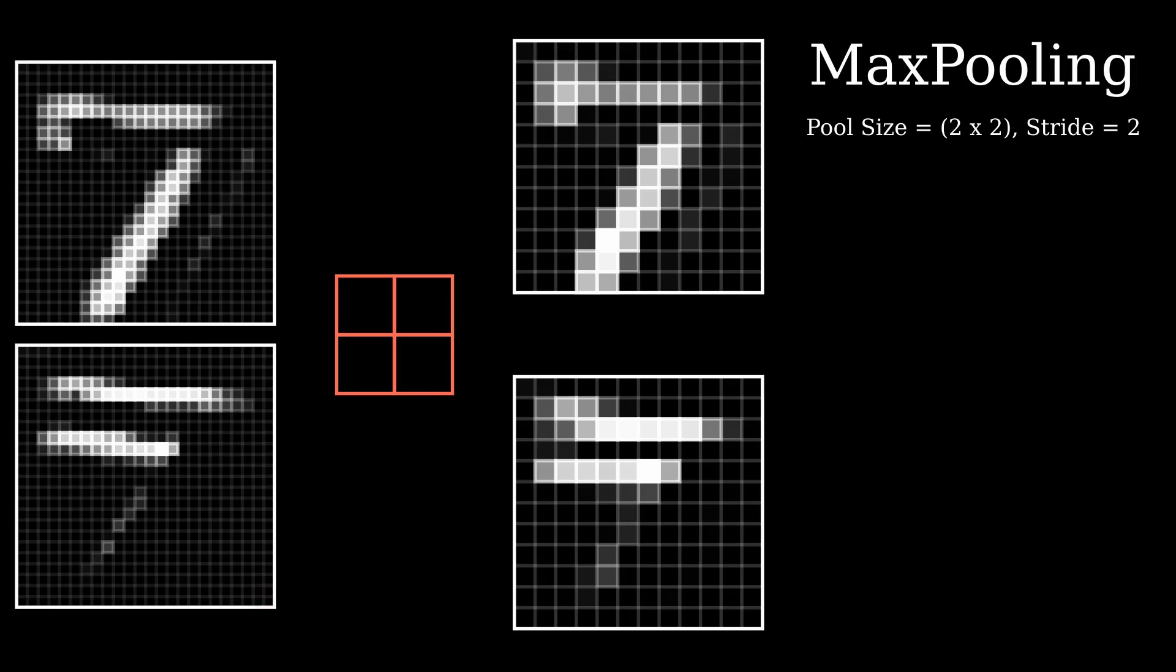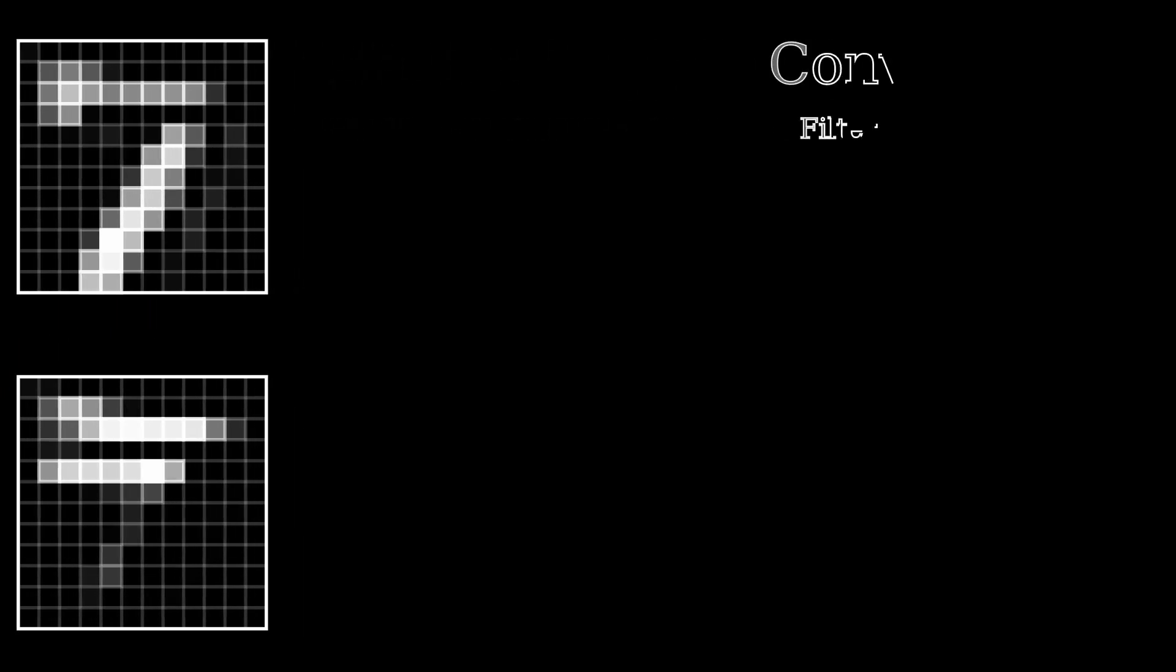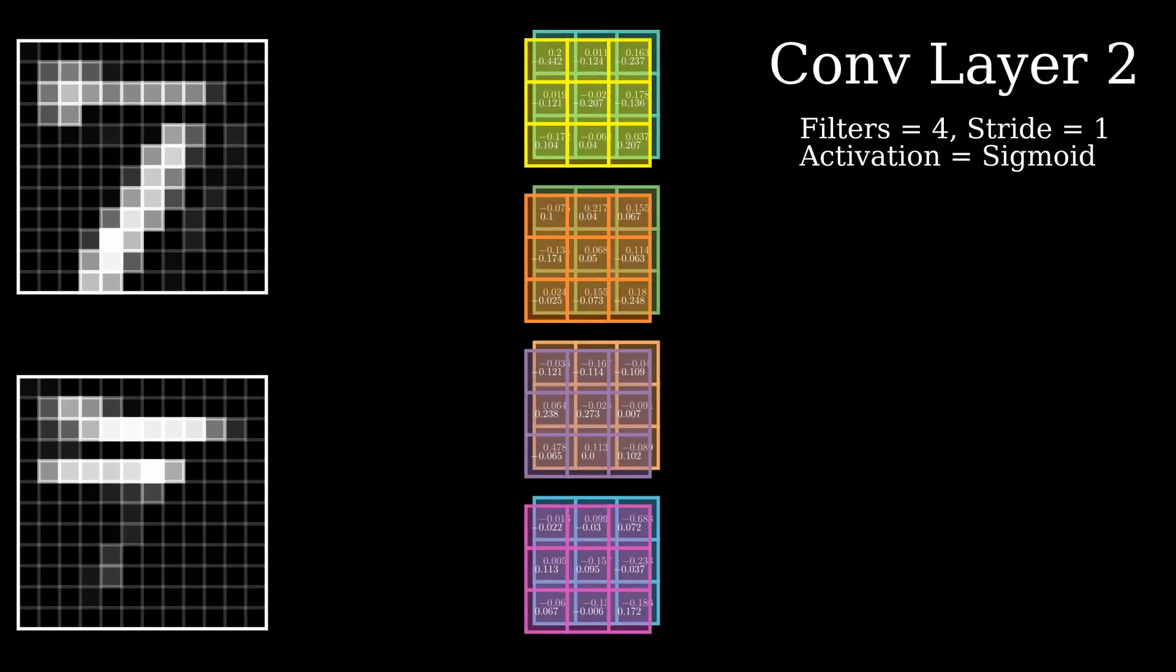Have a go and count the pixels if you'd like to. Next is the second convolutional layer. Here, we'll use 4 filters with a stride of 1 and an activation function called Sigmoid.